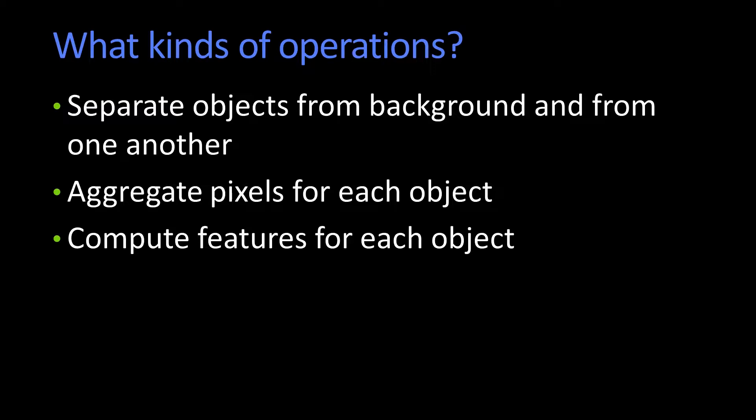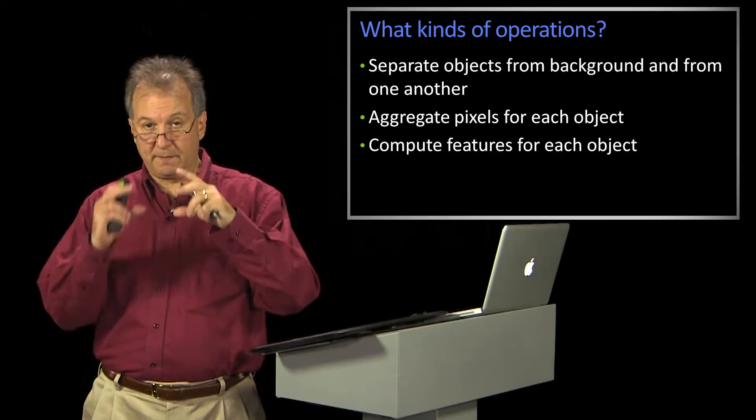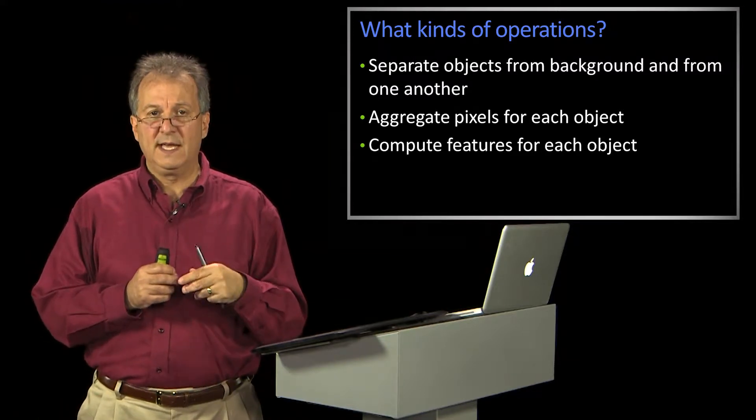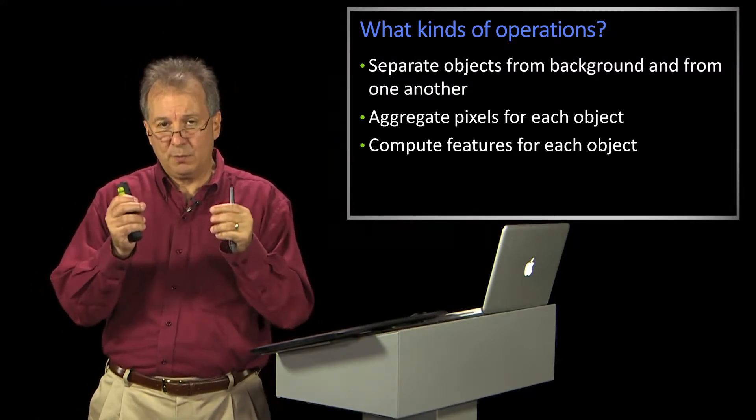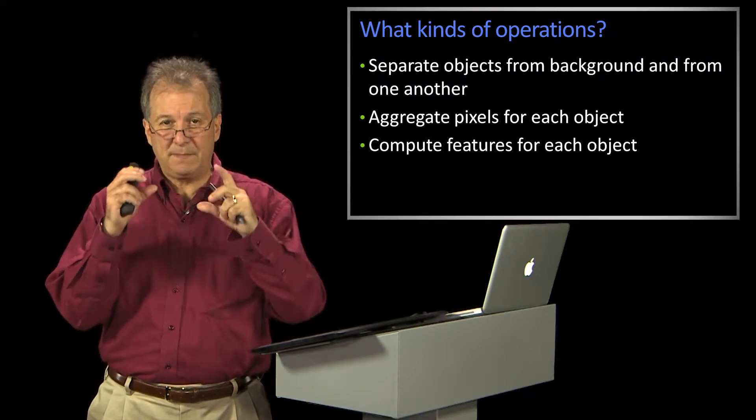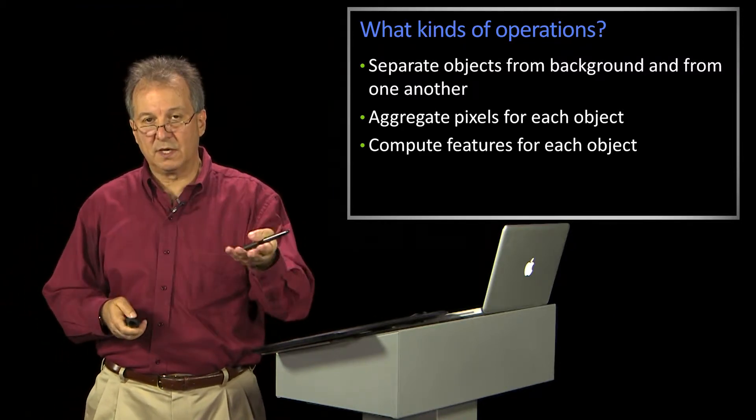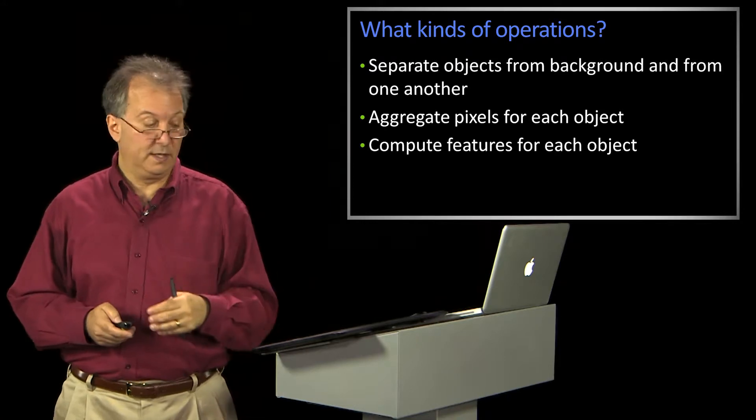And then another thing you might want to do is compute the features of a binary object. And we actually did this also. Remember we talked about hue moments, and we were talking about moments in general. And moments are a descriptor of the shape of a binary patch. And so, again, those are things that you would do on binary images.